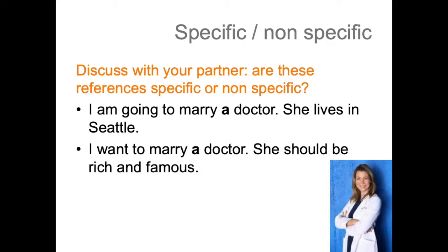'I'm going to marry a doctor. She lives in Seattle.' And 'I want to marry a doctor. She should be rich and famous.' In the first sentence, the reference is specific. The reference is clearly identified — you are mentioning her for the first time, hence the use of the indefinite article, but she has a clear reality. Among the entire set of doctors, you have selected one that you are going to marry. You could even give us her name. On the contrary, in the second sentence, the reference is non-specific, because the reference has no actual existence — it only has a virtual reality.